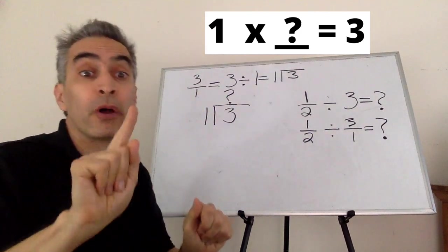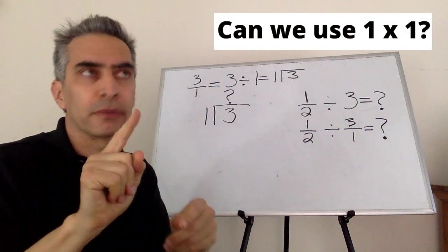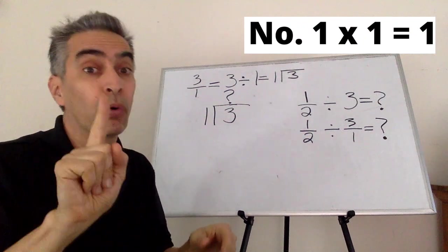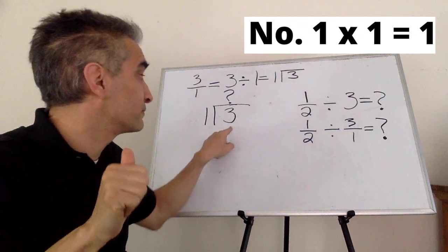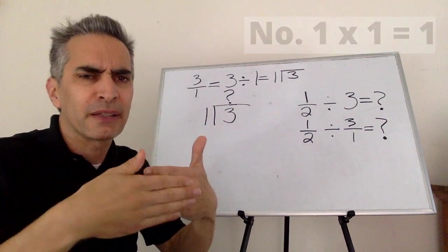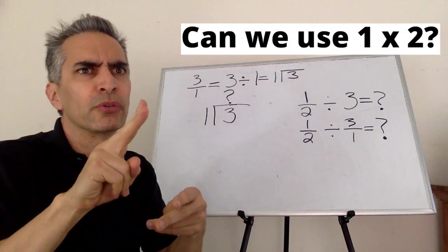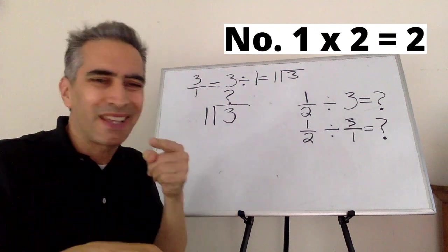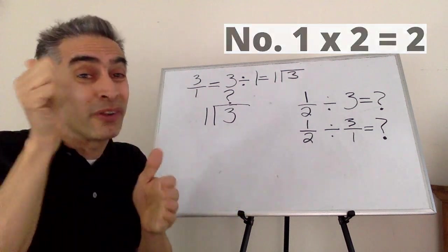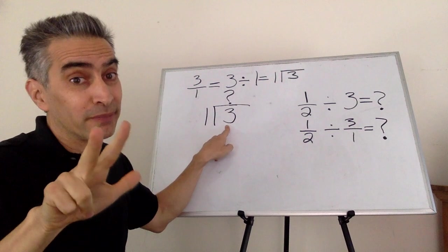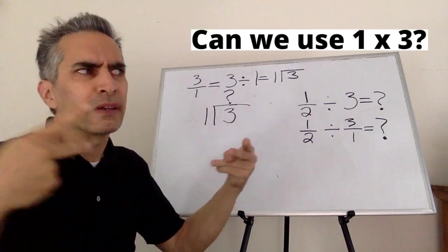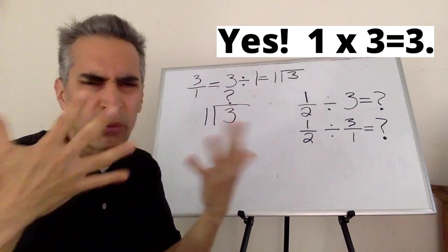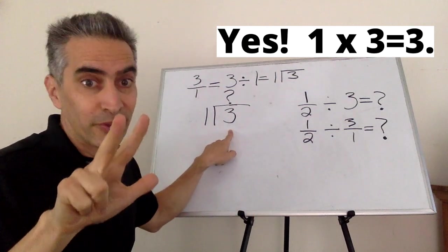Let's think about this one. Let's try one. One times one equals one. We can't use that because one is smaller than three. Next, one times two. One times two equals two. We can't use that either because two is smaller than three. Next, one times three. Yes, we can. One times three equals three.